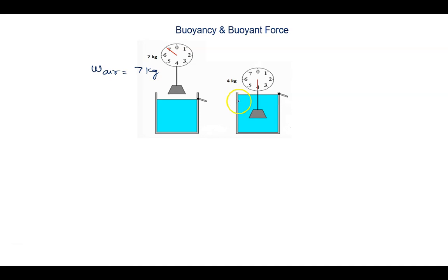We suspend this object into the water. We see weight in water is given by 4 kg. It means there is an apparent loss in the weight.